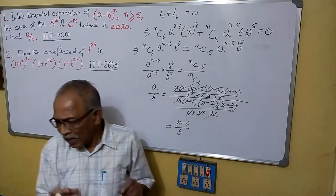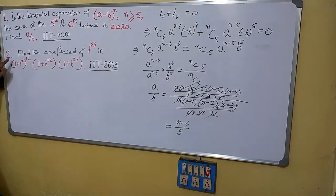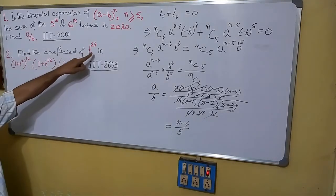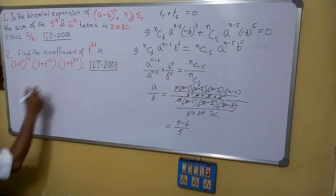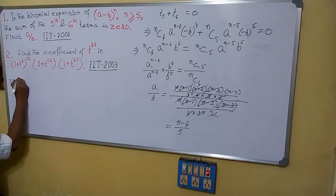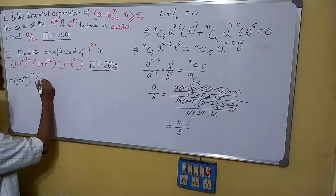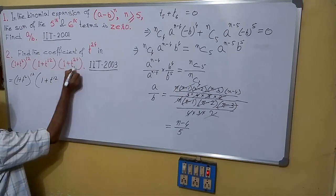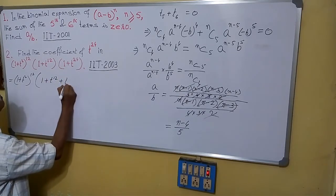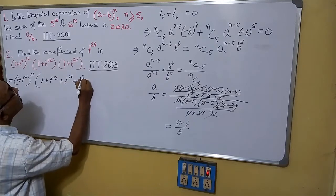So in this way it can be done in a very small time. Now come to the next question: find the coefficient of t^24 in this expansion. I will write this expansion in a different style, as (1 + t²)^12 multiplied by (1 + t^12 + t^24 + t^13).